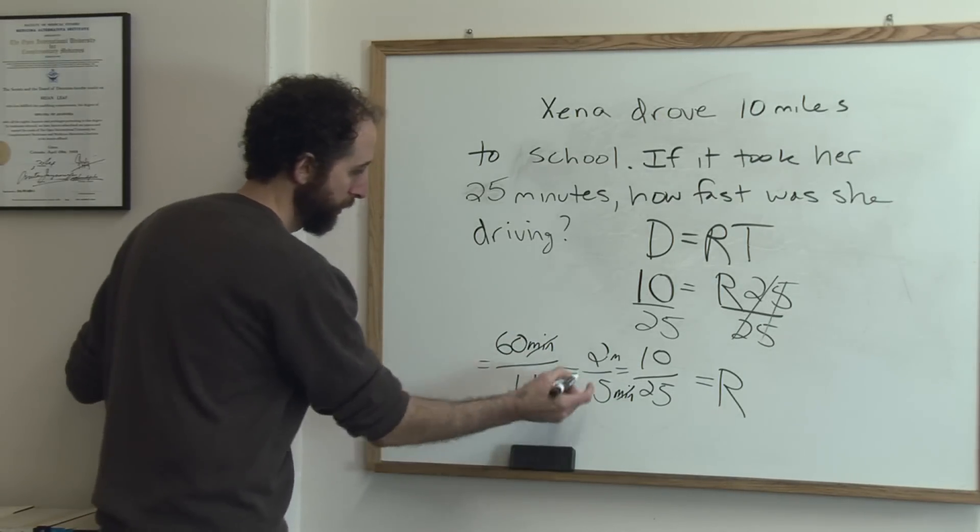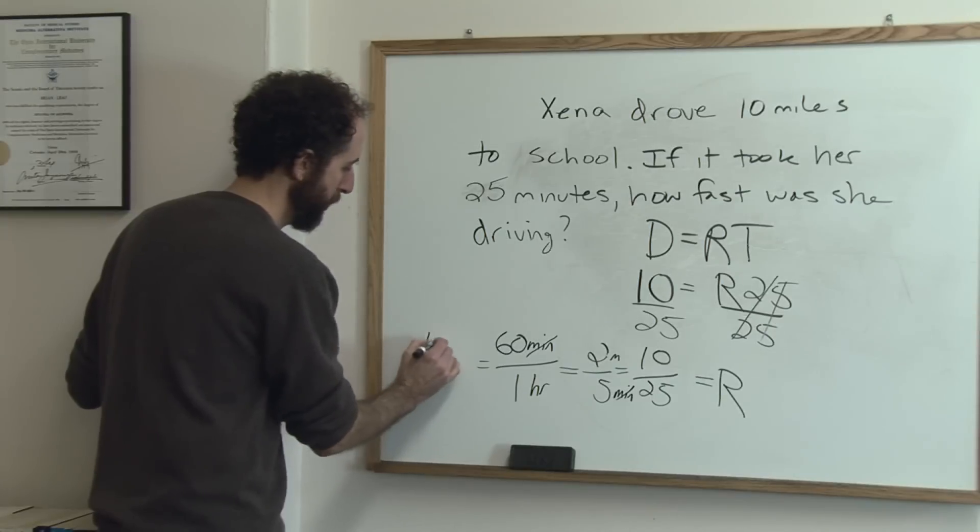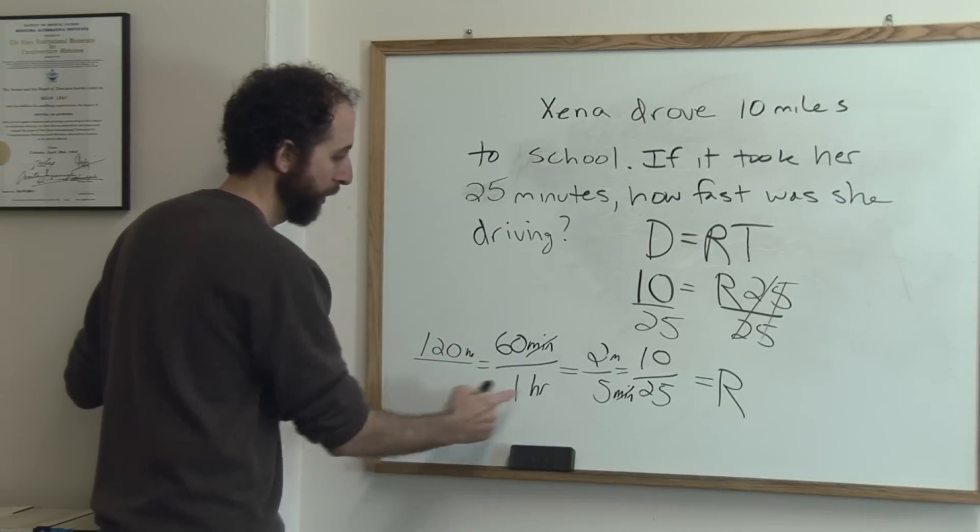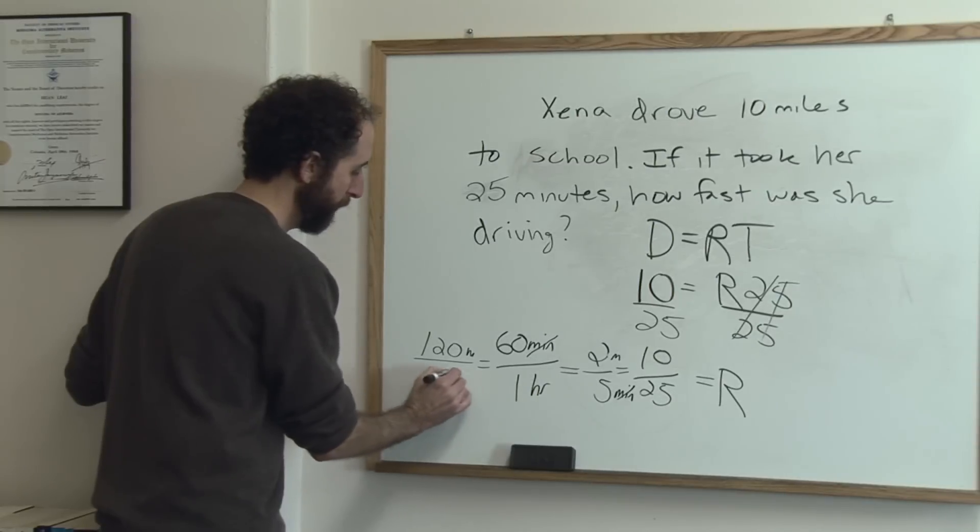Leaving us 2 times 60 is 120 on the top, and that's miles. Over 5 times 1 is 5 hours.